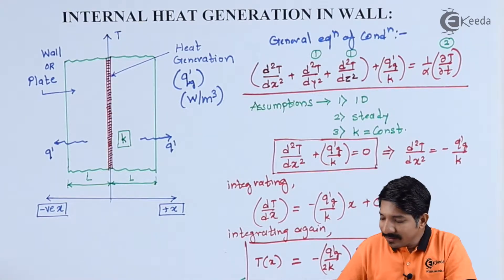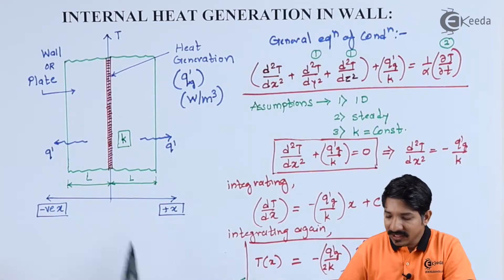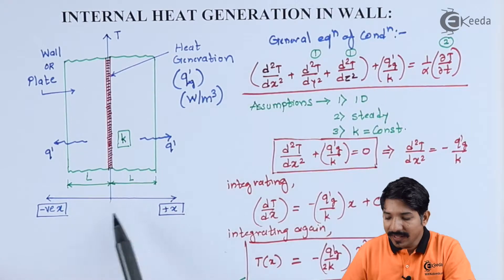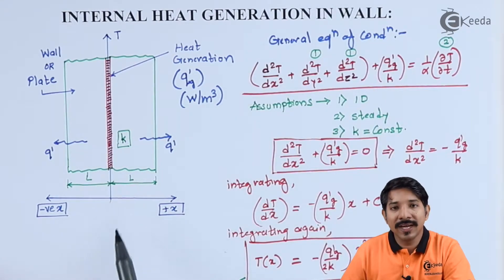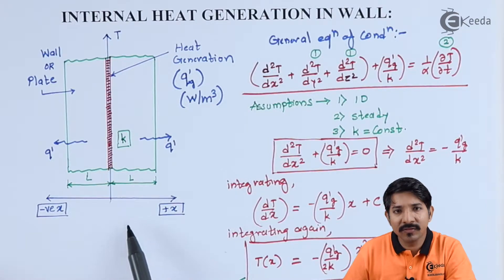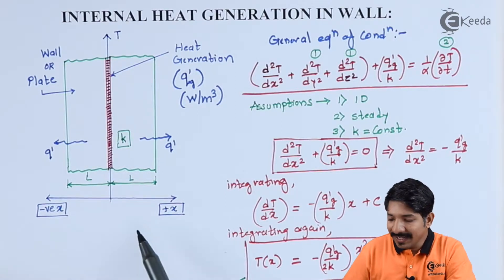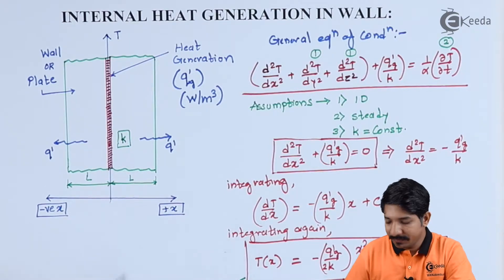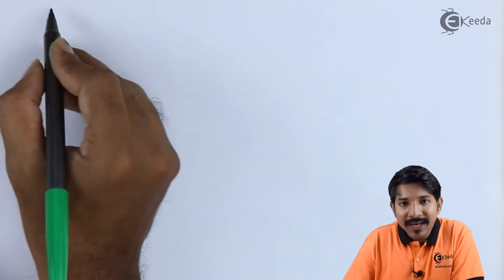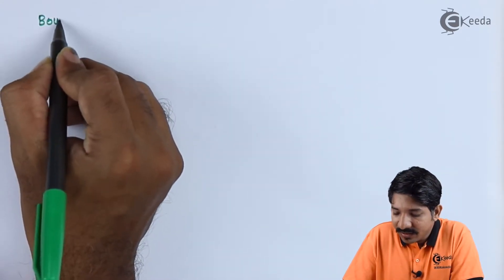To solve this equation we must know the boundary conditions. We have previously seen what types of boundary conditions and initial conditions exist. From those, we will consider three types of boundary conditions. Let me list them down.